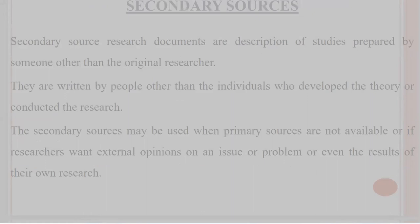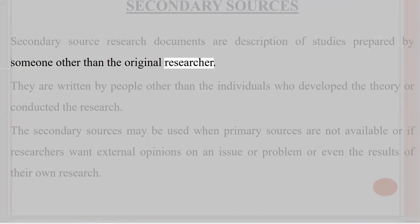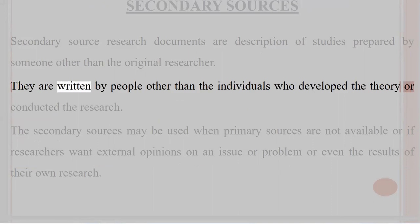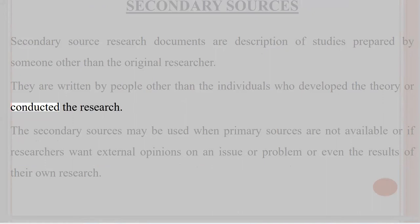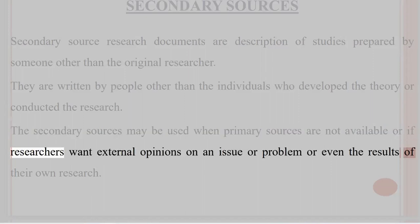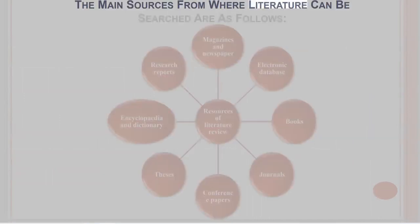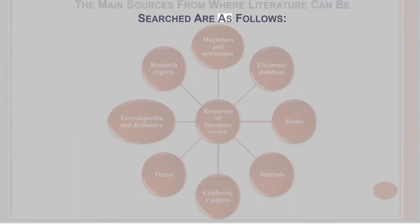Secondary sources. Secondary source research documents are descriptions of studies prepared by someone other than the original researcher. They are written by people other than the individuals who developed the theory or conducted the research. Secondary sources may be used when primary sources are not available, or if researchers want external opinions on an issue or problem, or even the results of their own research.